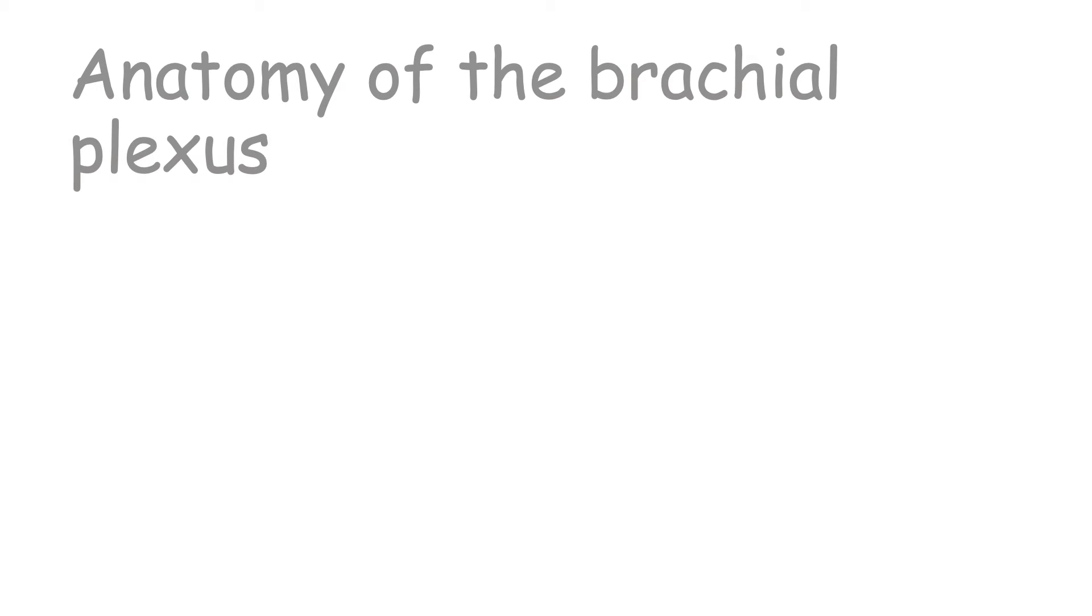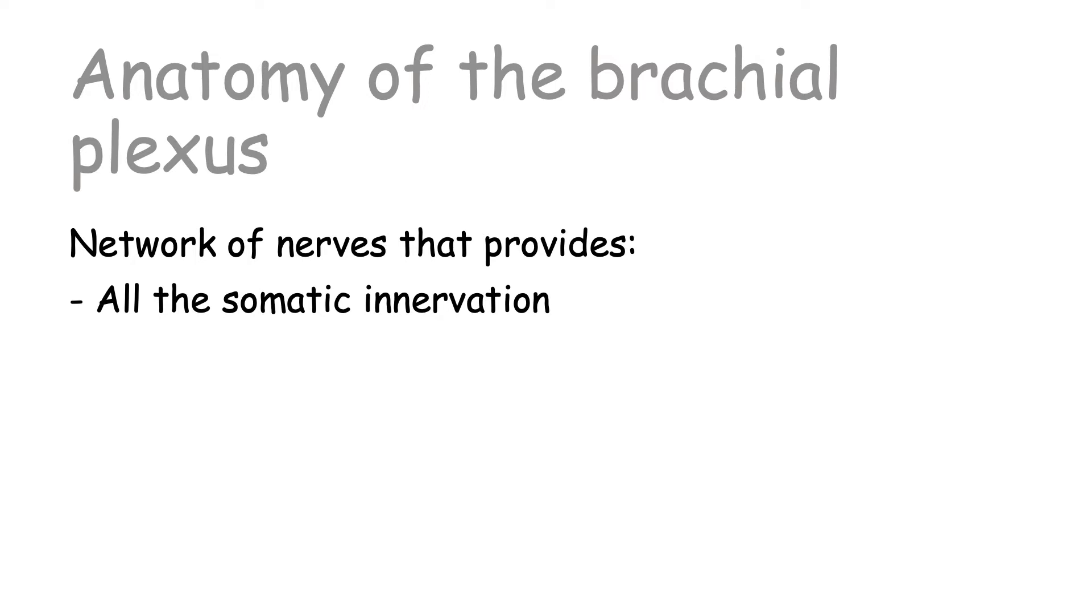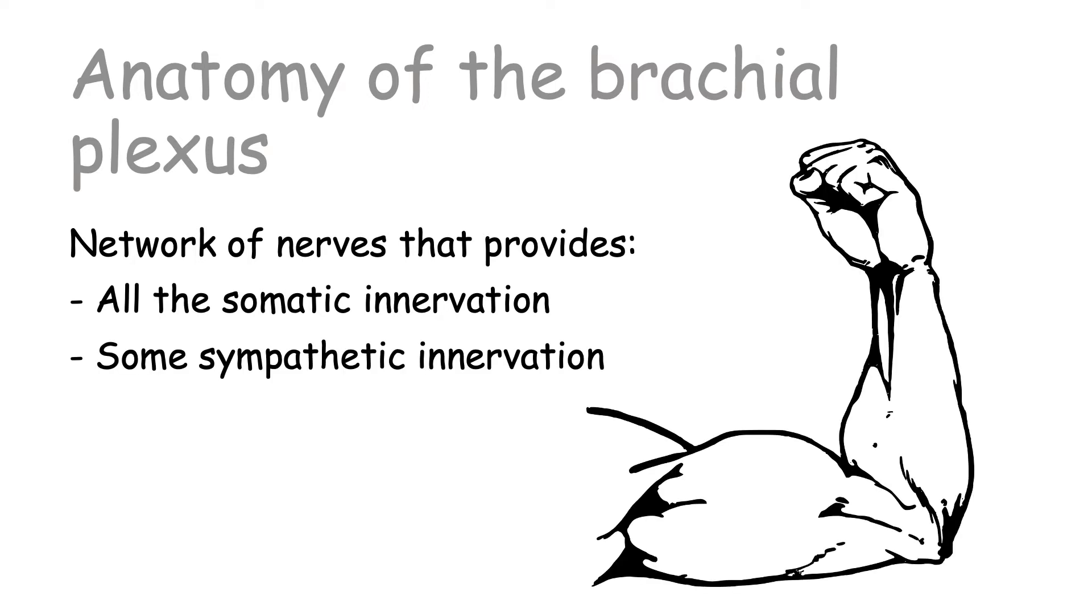Hello everyone and welcome. Today we're going to talk about the anatomy of the brachial plexus. So the brachial plexus is a network of nerves that provide all the somatic innervation and some sympathetic innervation to the upper limb.